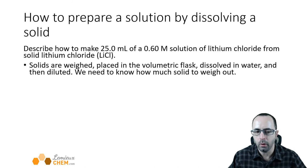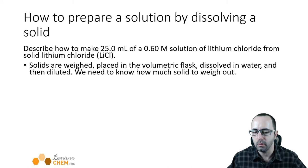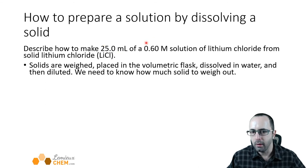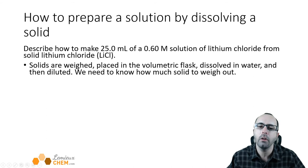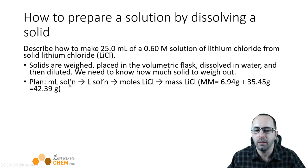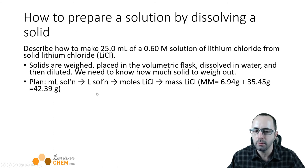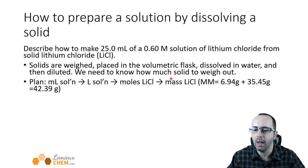Solids are weighed. The process is: weigh the solid, place it in the volumetric flask, dissolve it in a little bit of water, and then dilute. We need to know how much solid to weigh out. Fortunately, we have the volume and the molarity, so we can get the moles. Remember, molarity means moles per liter — but our volume is in milliliters, not liters. So our plan is: convert milliliters to liters using 1 liter = 1000 milliliters, then convert liters to moles of lithium chloride using the molarity, then convert moles to grams using the molar mass.